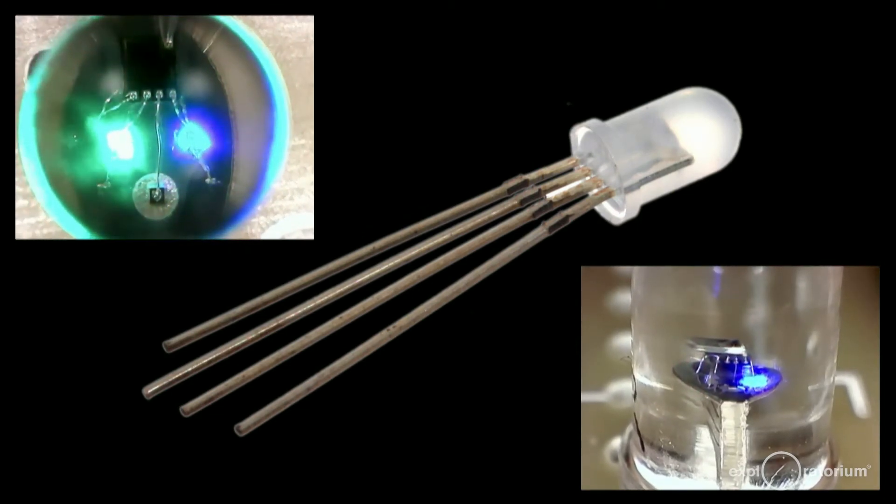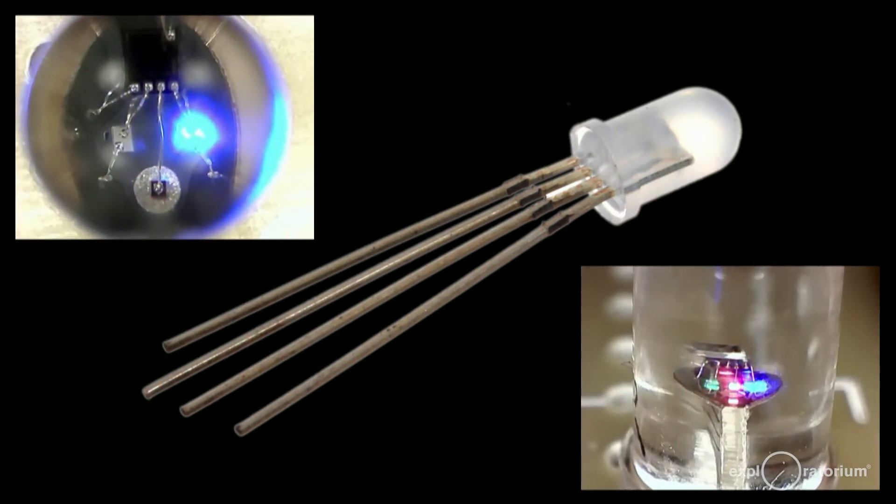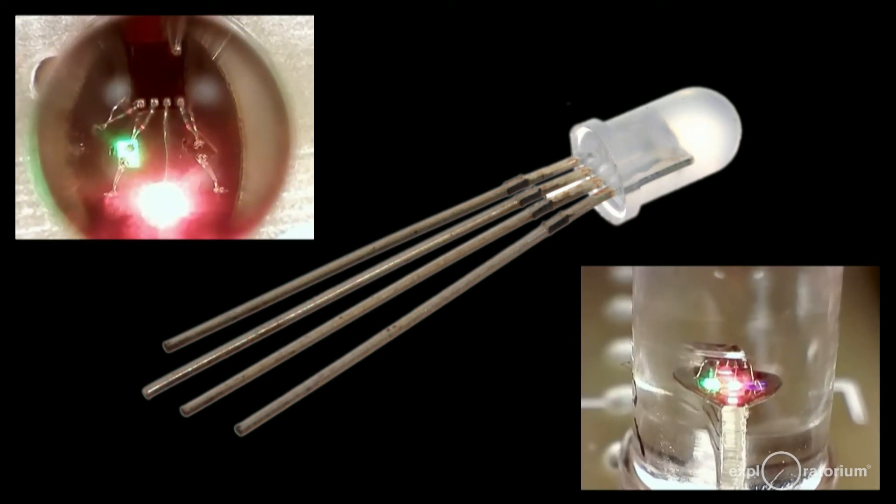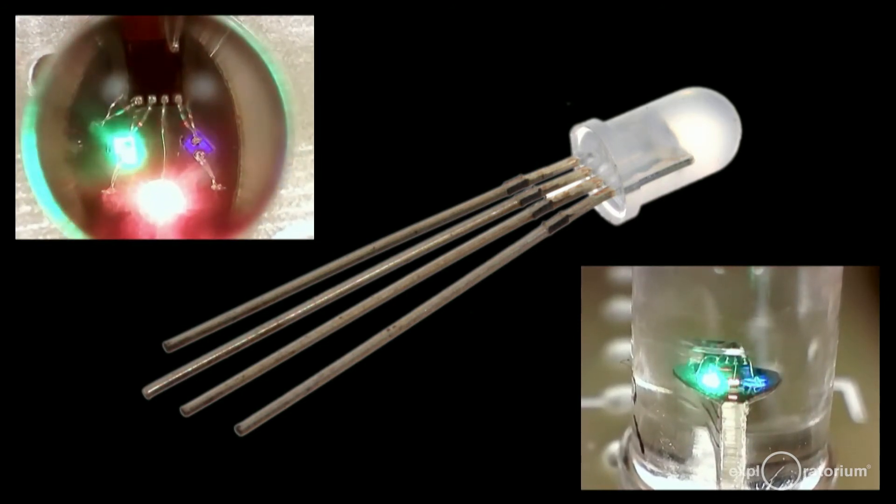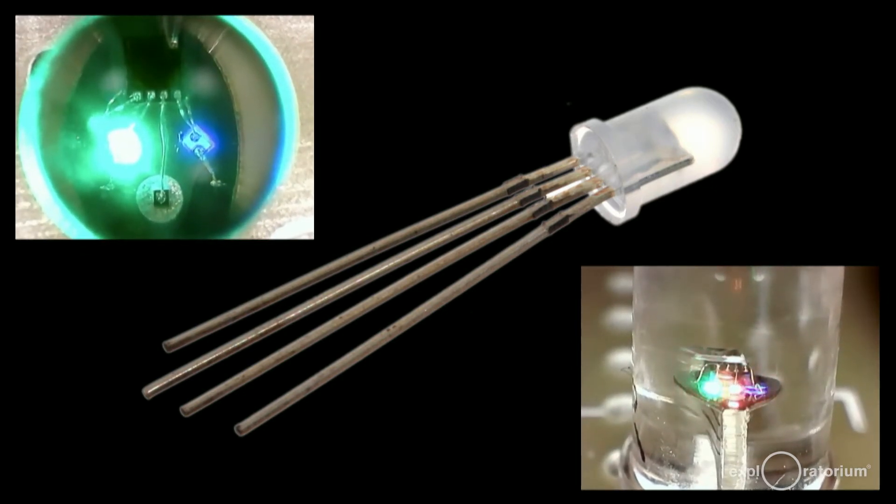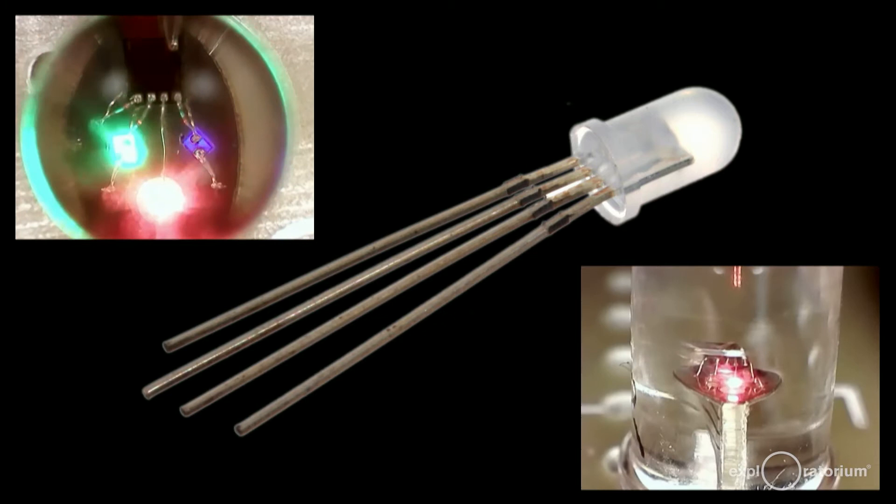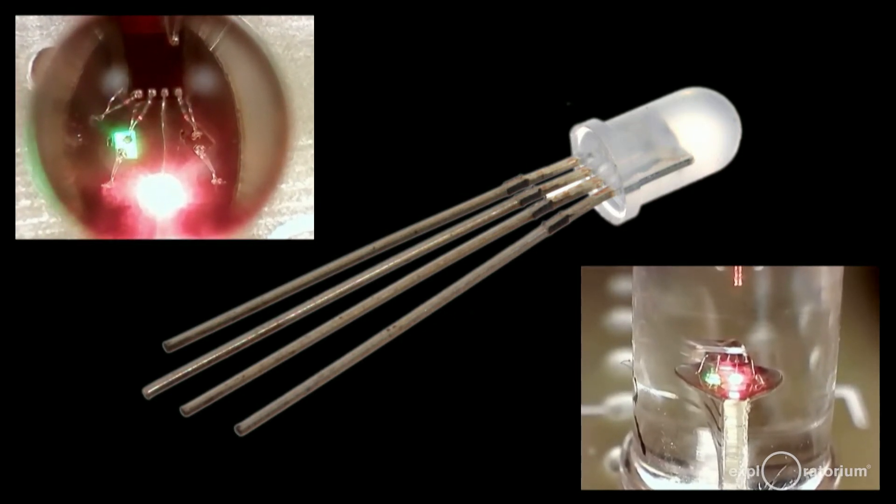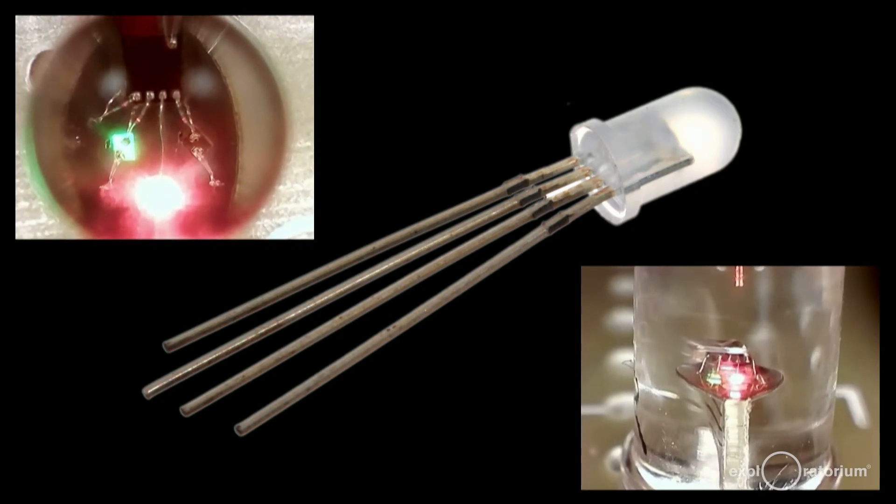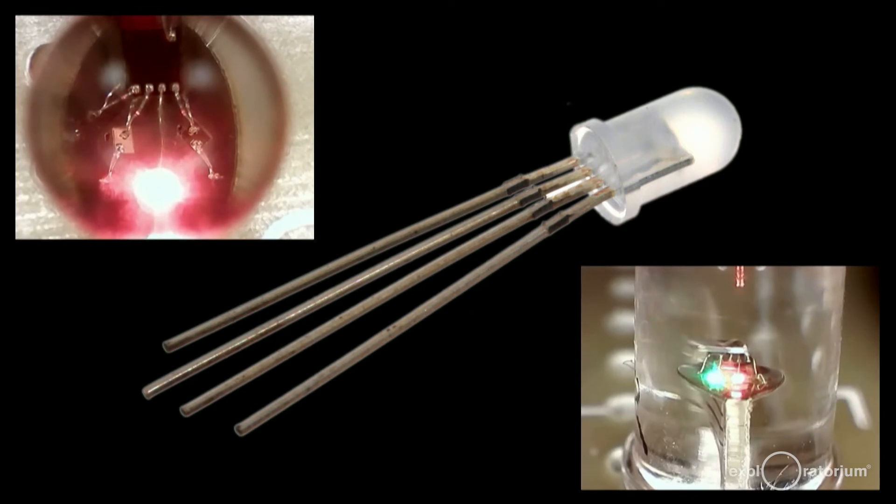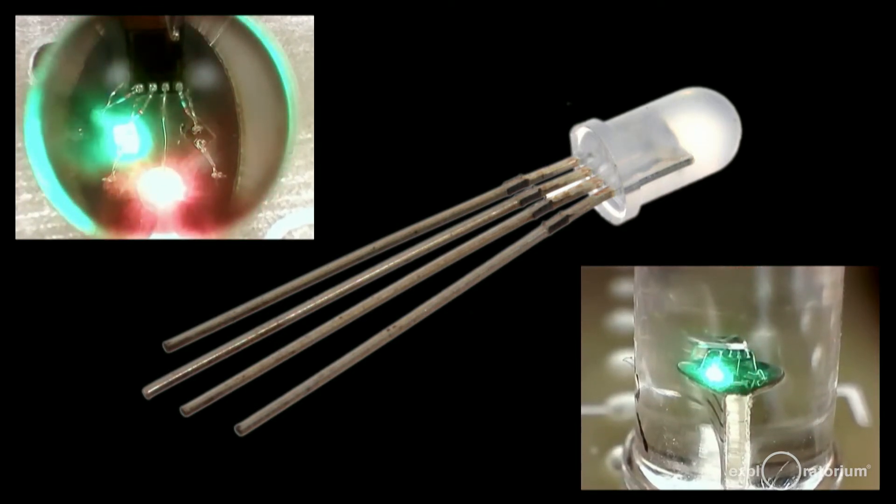You can get multi-color LEDs too. They really contain three LEDs each and have four wires: one each for the red, green, and blue LED and the fourth wire for the common wire. The top left movie shows the RGB LED from above as the LEDs are changing brightness, and the bottom right movie shows the same LED from the side. By varying brightnesses, you can make any color with these LEDs.